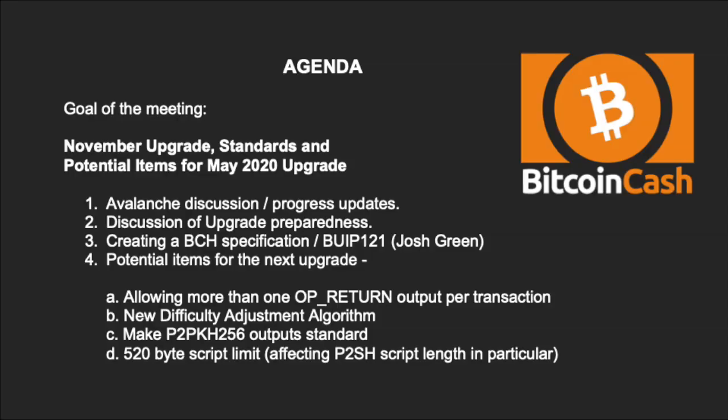With introductions out of the way, we have a fairly full agenda today. The first item will be discussion of Avalanche. Second will be discussion of upgrade preparedness. The third is creating a BCH specification, related to BUIP 121. Following that, we'll discuss upgrade potential items — four items potentially on the table — and then questions from the audience.